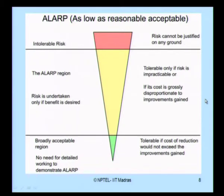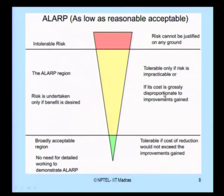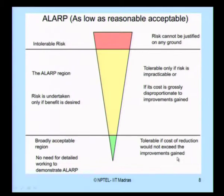When discussing risk acceptance, we consider what is called ALARP — As Low As Reasonably Practicable. The red band represents intolerable risk, where risk cannot be justified on any ground. The yellow band is the ALARP region, where risk is undertaken only if the benefit is desired, or is tolerable only if reduction cost is grossly disproportionate to improvements gained. The green band is broadly acceptable — no detailed ALARP demonstration needed, and risk is tolerable if reduction cost would not exceed improvements gained.